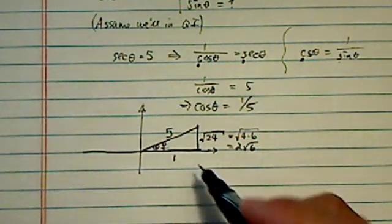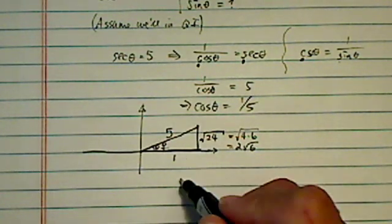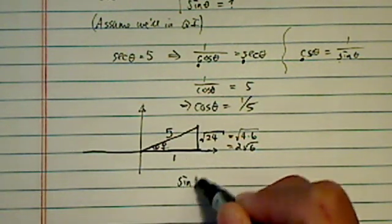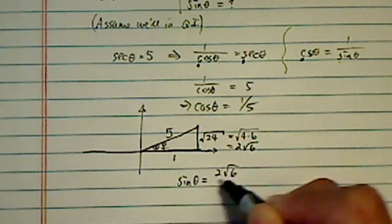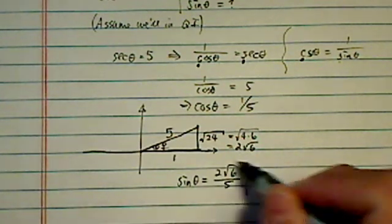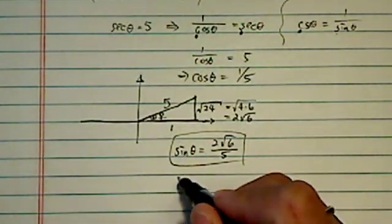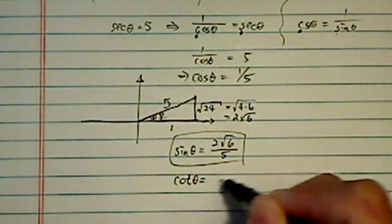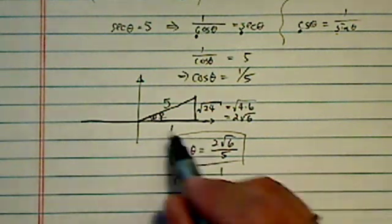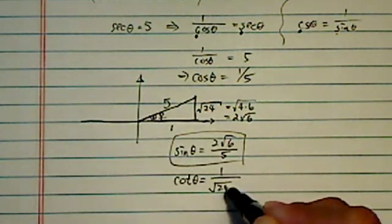Okay, now this is all we need to find the rest of the relatives. For example, sine theta is opposite, which is 2 radical 6, over the roof. So here's one of the relatives we're looking for, cotangent, is whatever adjacent, i.e., whatever you're sitting on over, whatever you're looking at.